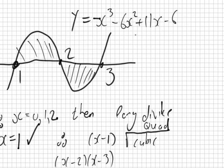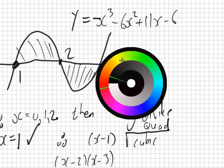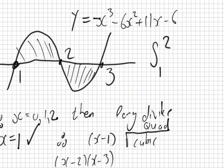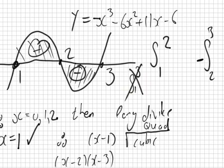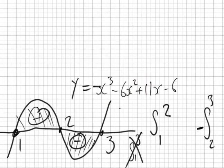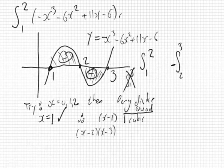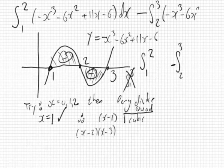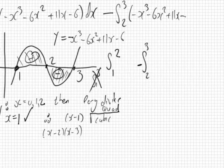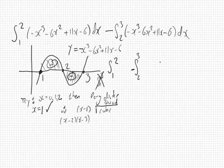Now that we have the three solutions, you must be very careful: separate the area into the interval 1 to 2, and then 2 to 3. The 2 to 3 part gets a minus sign because it's in the negative region. If you just integrated from 1 to 3, you would get the wrong answer. So: integrate from 1 to 2 of (x cubed minus 6x squared plus 11x minus 6) dx, minus the integral from 2 to 3 of the same function.